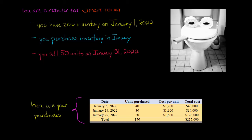On January 5th, we make our first purchase. We purchase 40 units of the smart toilet at $1,200 per unit. So we've got 40 units at $1,200, that's $48,000 purchase on January 5th.